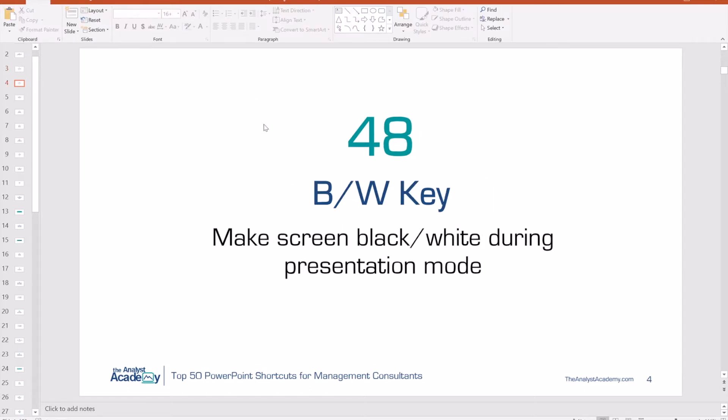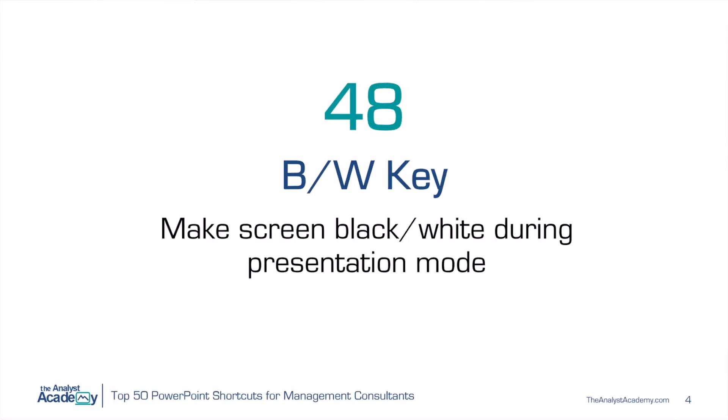Number 48: the B or the W key. This one's great for presentation mode. If you're presenting something but you're having a discussion that has nothing to do with the actual content on the slide, you can just push B — the slide will go completely black. Hit Escape to get out of it. Push W to make the slide completely white.